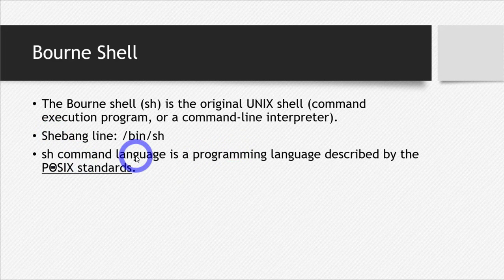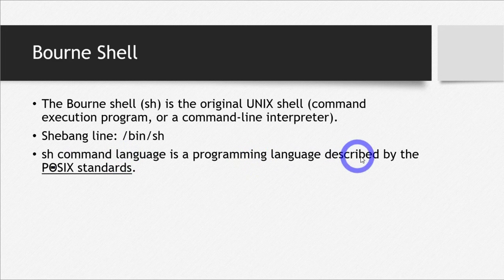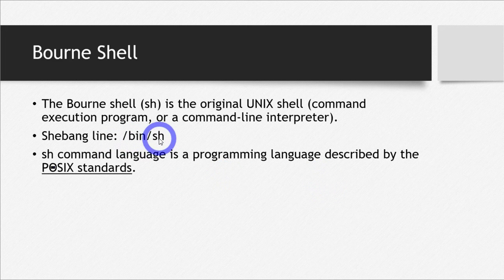The shell command language, which we also call shell scripting, is a programming language described by the POSIX standards. The shell scripting for born shell — since I've written SH, that means I'm referring to born shell — is described by the POSIX standards. Born shell was actually the default shell for version 7 of Unix. Many Unix-like systems continue to have SH, which will either be born shell or a symbolic link or a hard link to a compatible shell, even when other shells are used by most users.